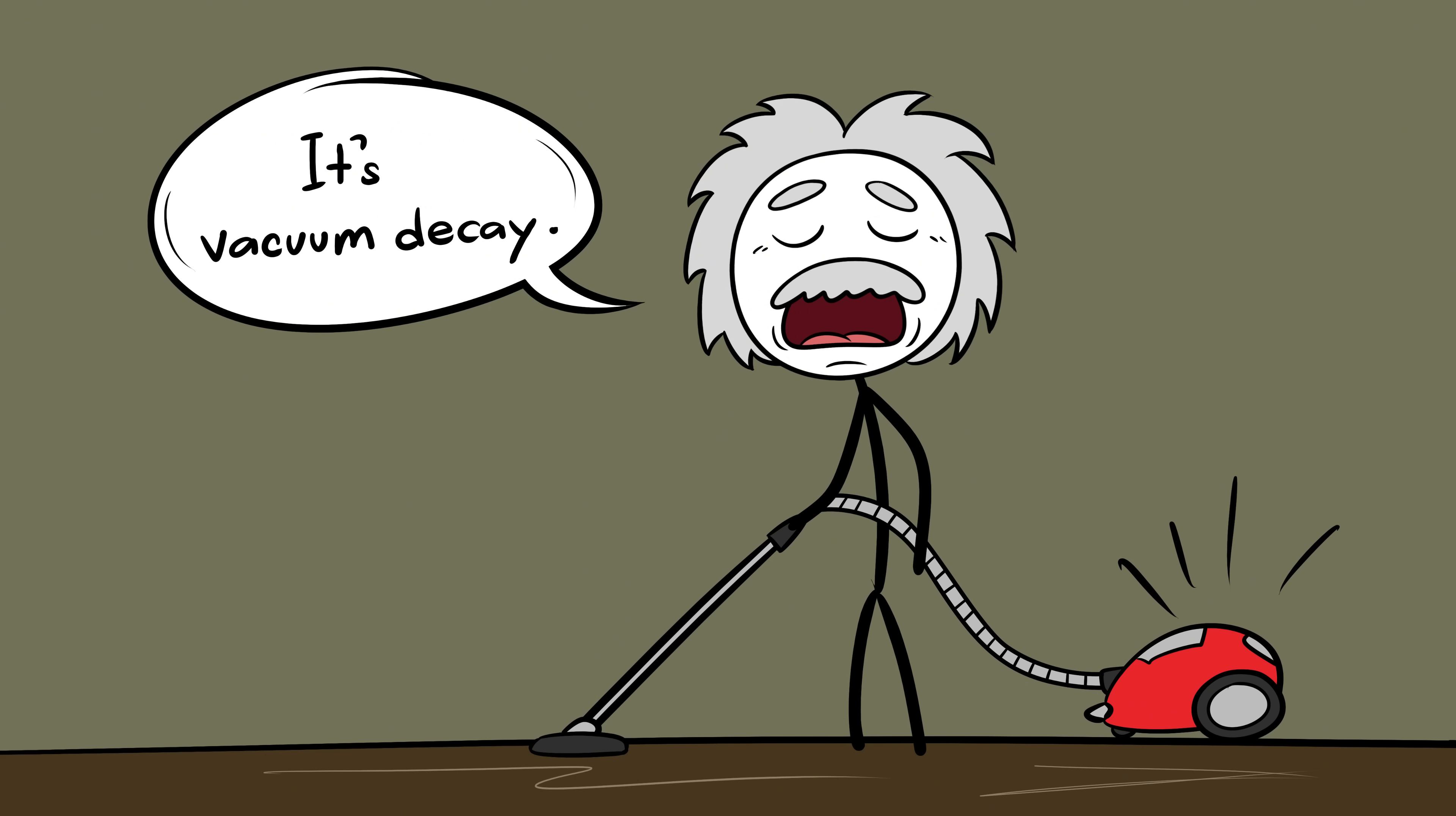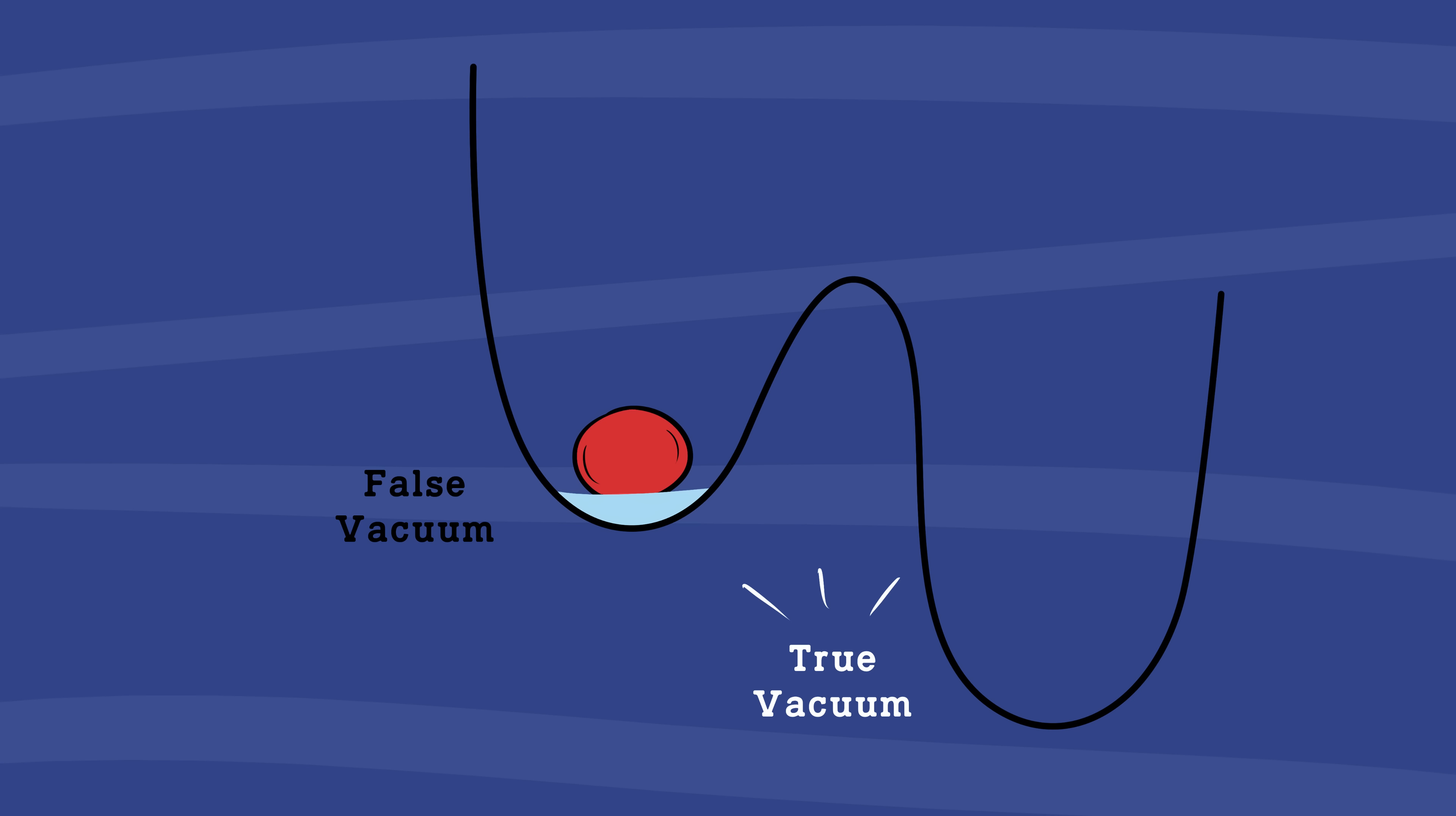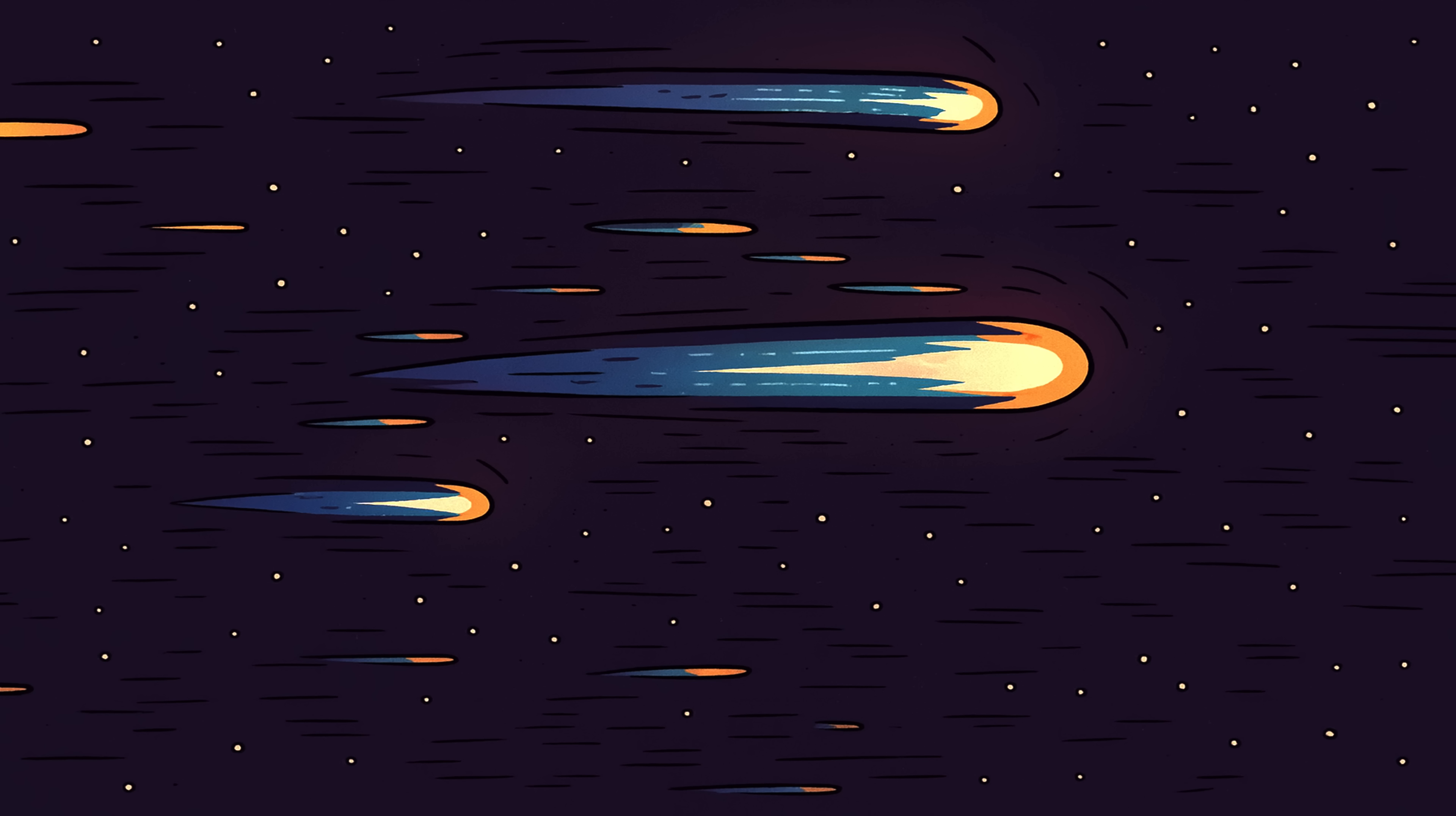See, our universe might not be in a truly stable state. It could be sitting in what's called a false vacuum, basically a cosmic temporary setup that only looks permanent. Think of it like a ball resting in a shallow valley, but there's a deeper valley nearby. One day, a quantum fluctuation could nudge that ball, and the entire universe would suddenly fall into a lower energy state. If that ever happens, a bubble of true vacuum would appear and expand at the speed of light, erasing everything it touches. Atoms, stars, galaxies, you, me, all of it.